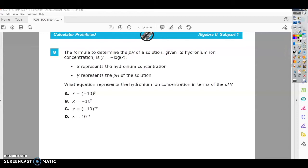What equation represents the hydronium ion concentration in terms of pH? So 'in terms of' means basically we're going to switch it and rewrite this equation.